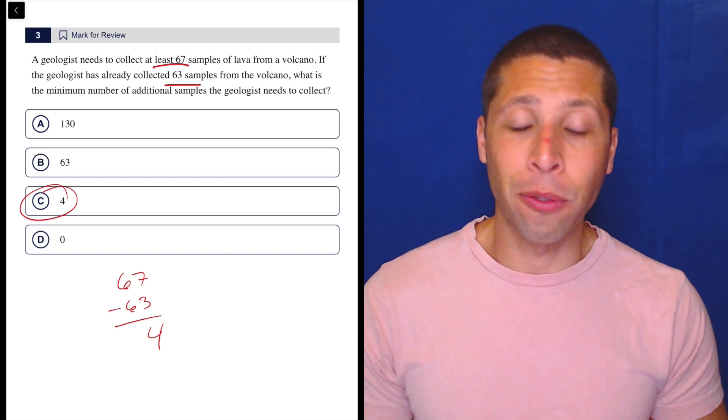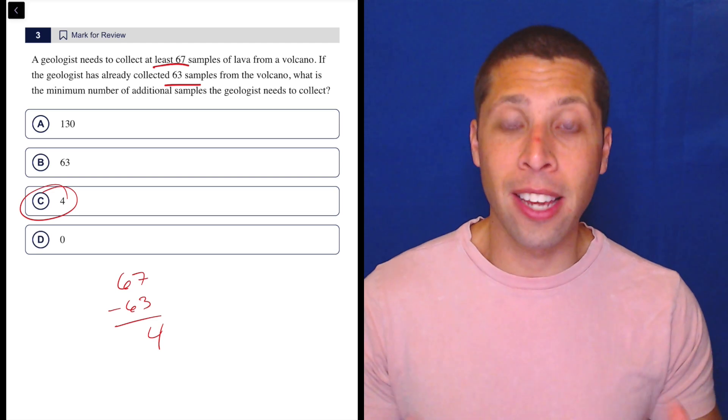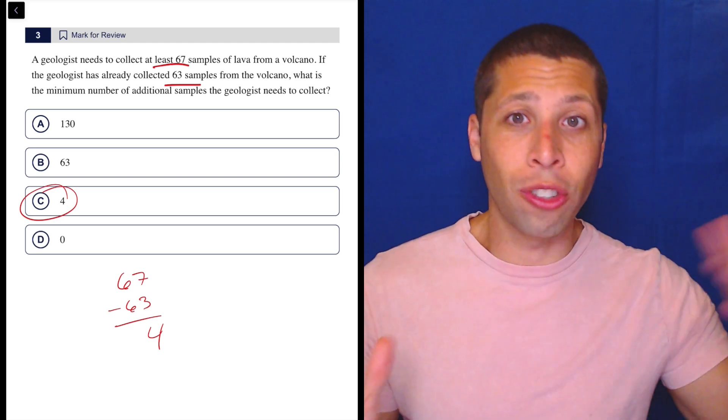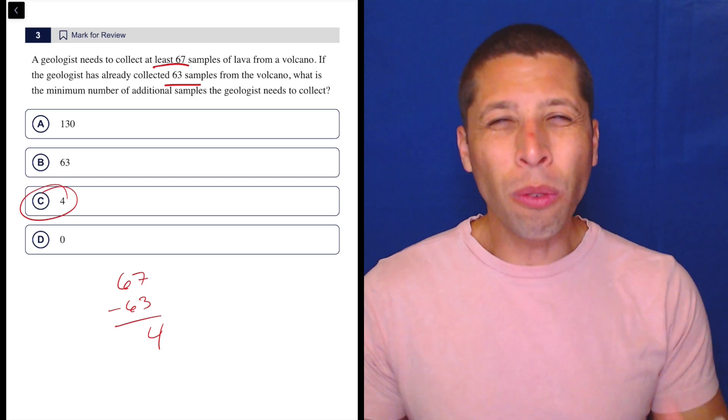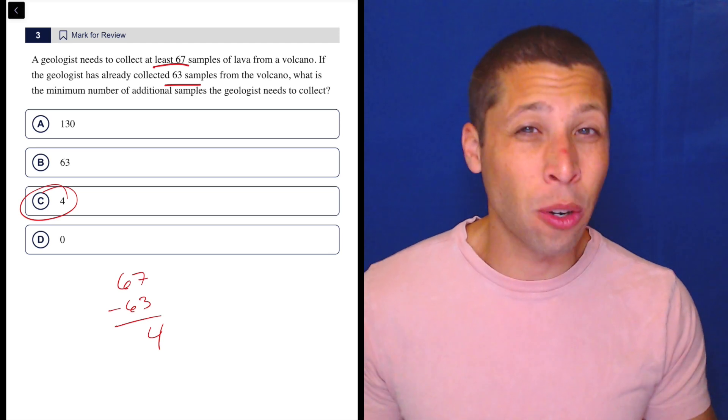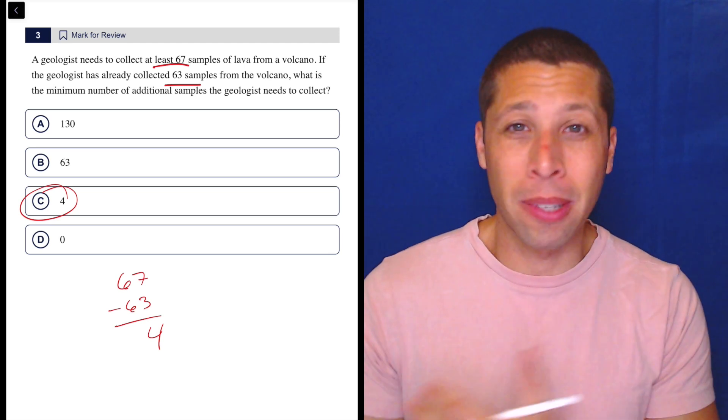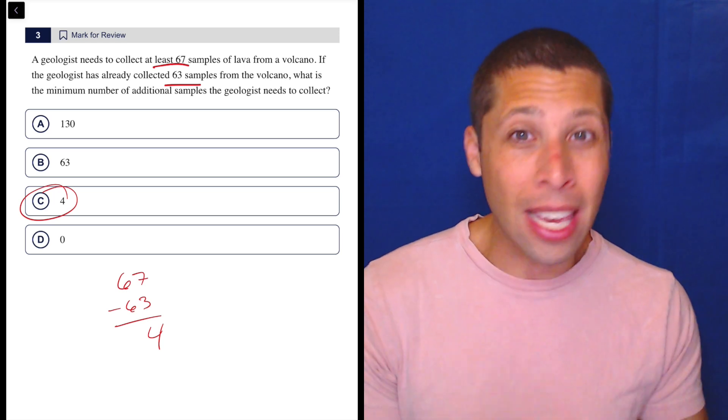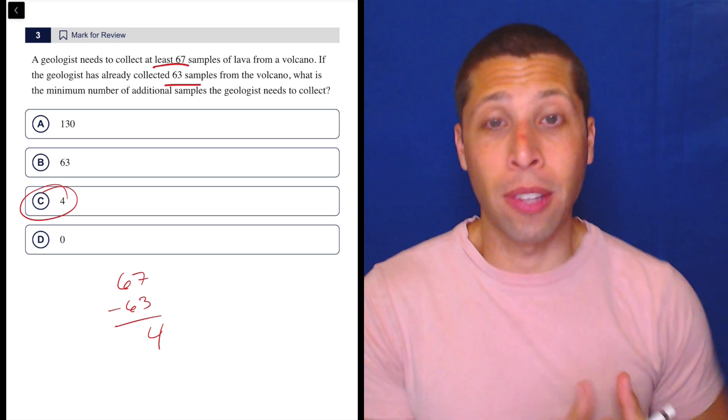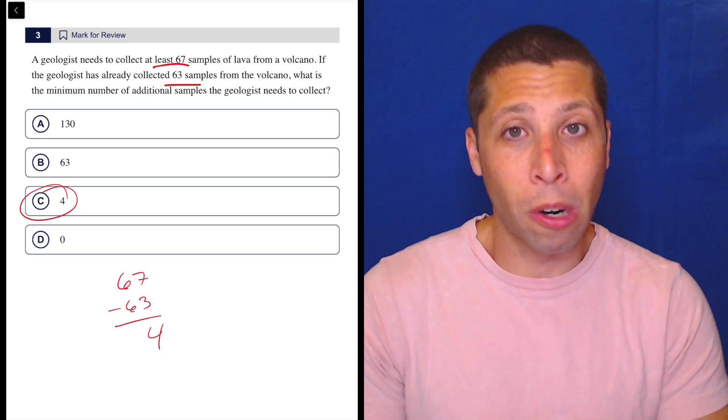So another reminder for the general PSAT and SAT is in the math sections, the questions are generally in order of difficulty. So you don't really have to worry about traps in that first like 10 questions or so. It's generally just going to be the wrong answers are like common mistakes, not really like they're out to get you. It's when we get to the later half of the sections, the modules that we do need to worry about traps.